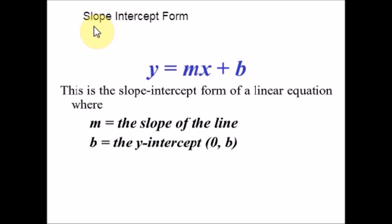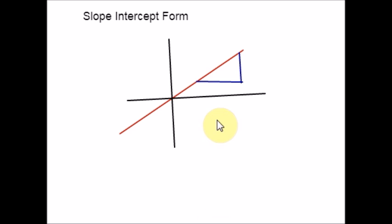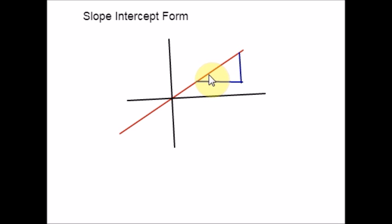Let us discuss what is meant by slope, intercept, and what is slope-intercept form. For more details about the slope, you can refer to a previous video. Slope is nothing but a number that will help us measure the steepness and direction of the line. It is the ratio of the vertical change of the graph to the horizontal change. We often refer to slope as rise over run.